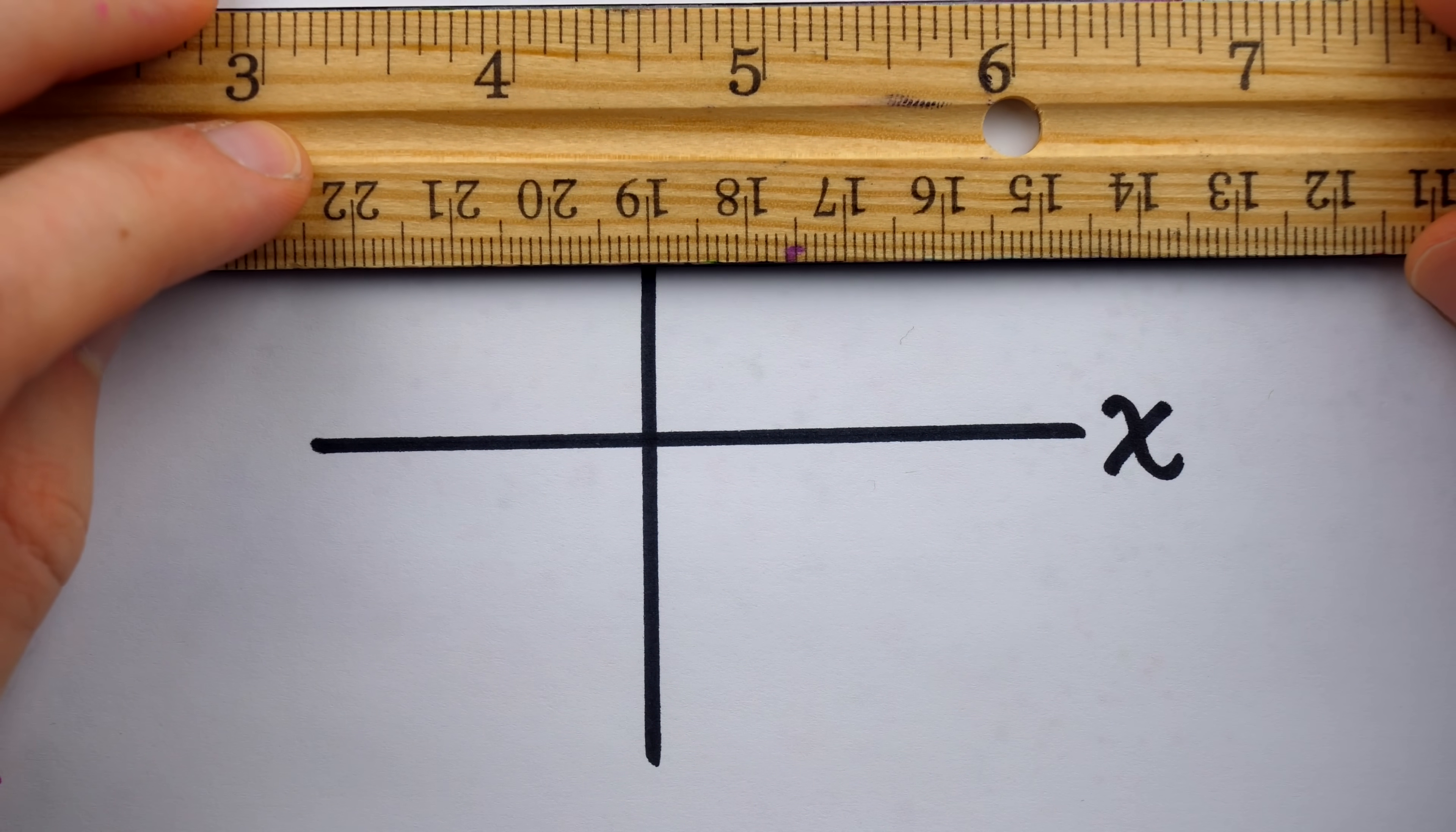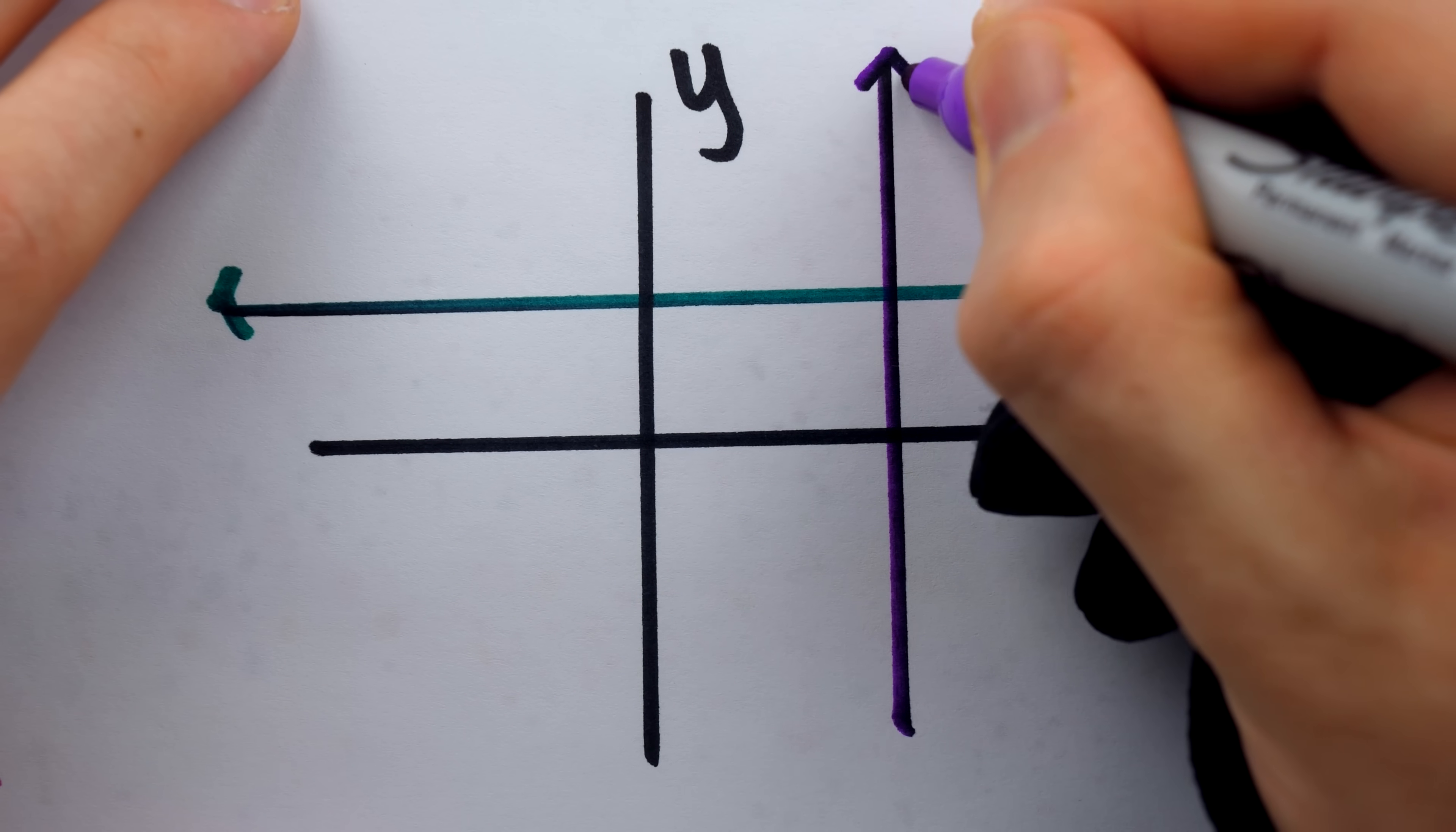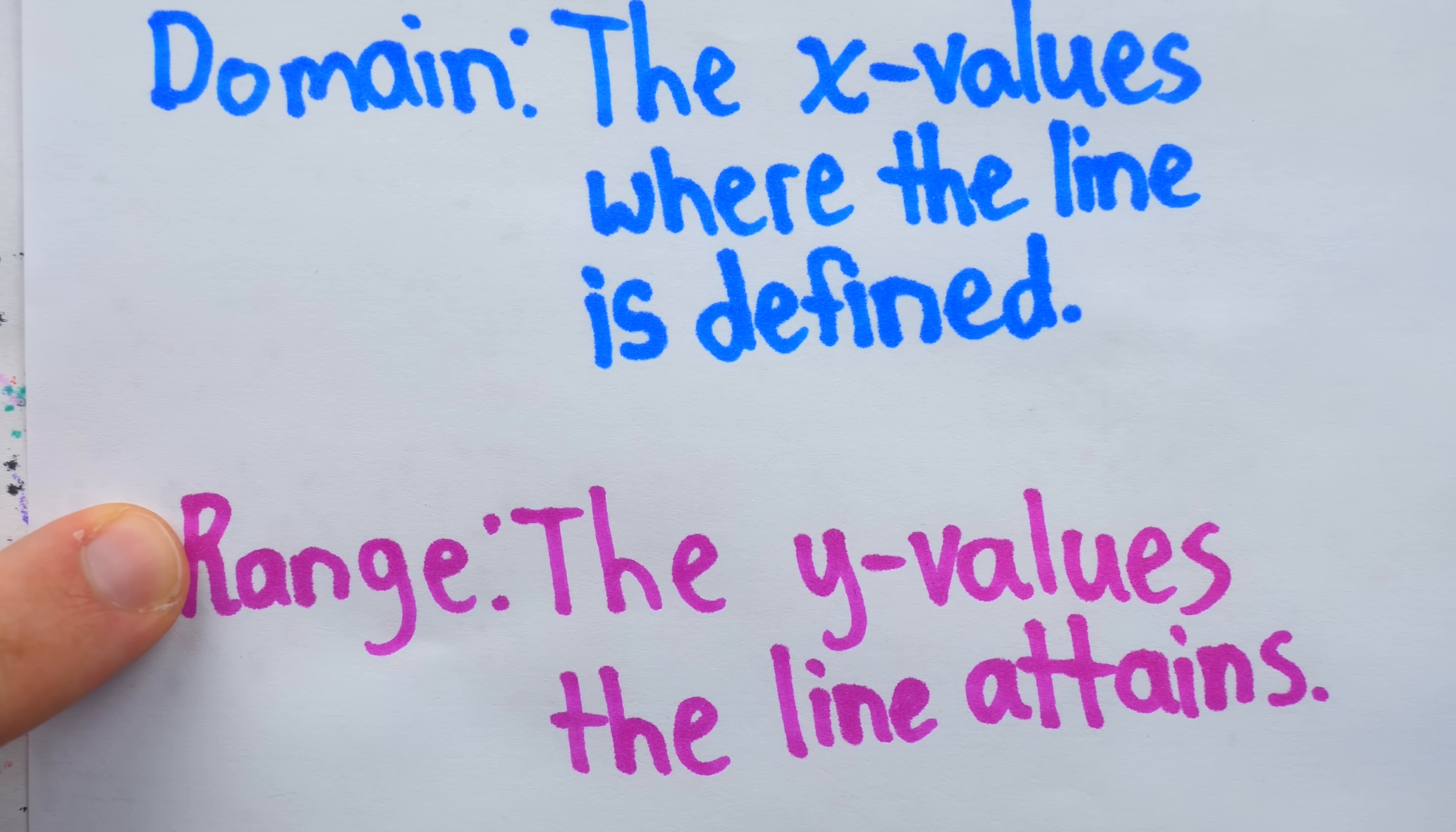Can you think of a line that doesn't take on every y value? Unfortunately, yes. Any horizontal line that's parallel to the x axis will take on only a single y value. Worse still, a line perpendicular to a horizontal is vertical and takes on only a single x value. So these perpendicular lines